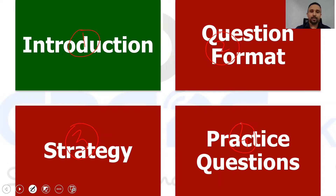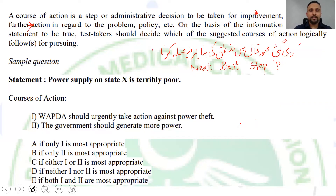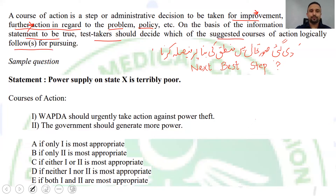Let's start off our discussion with the introduction. A course of action is a step or administrative decision to be taken for improvement, follow-up, or further action in regard to a problem. So for any problem or policy, you have to take some administrative decision — for improvement, follow-up, or further action. Based on some basic information, you have to decide what to do next in that particular situation.